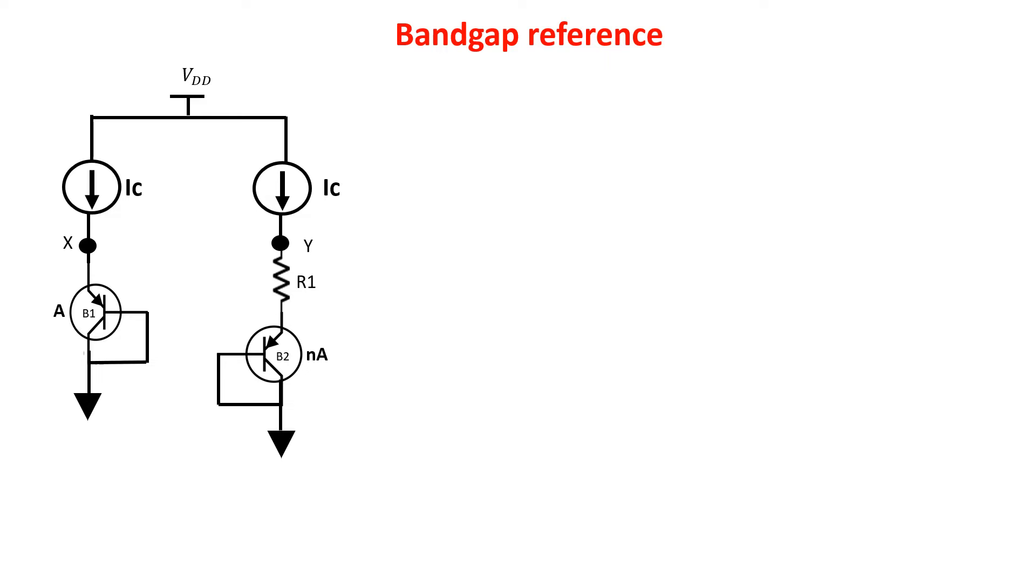Now to add the CTAT and PTAT voltages we use this circuit. If we assume that voltage Vx is equal to voltage Vy, we can write that VBE1 is equal to VBE2 plus R1 times the current IC. So VBE1 minus VBE2 is equal to R1 IC, but this is also equal to VT natural log of N. So in the end, Vy is equal to VBE2 plus VT log N. So we have the sum of CTAT and PTAT voltages.